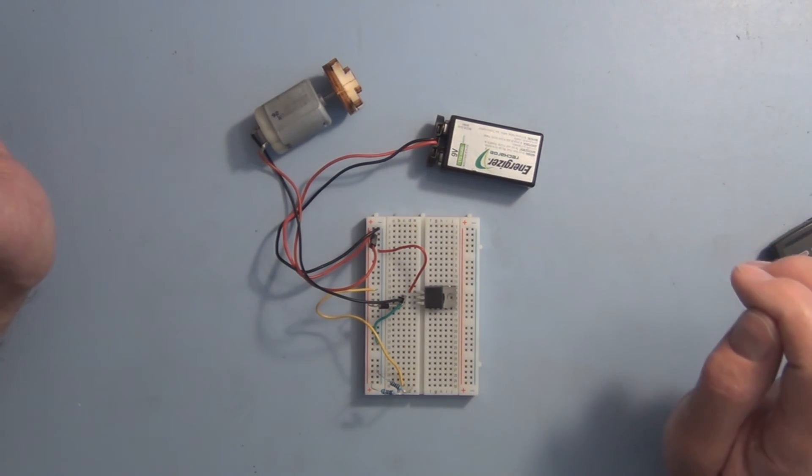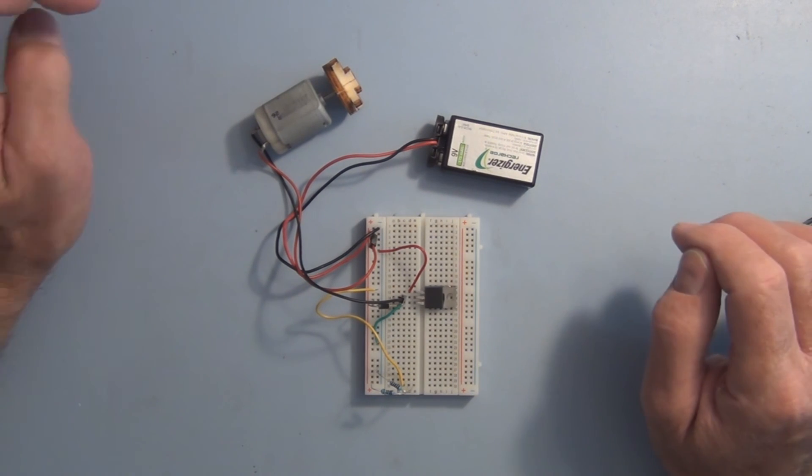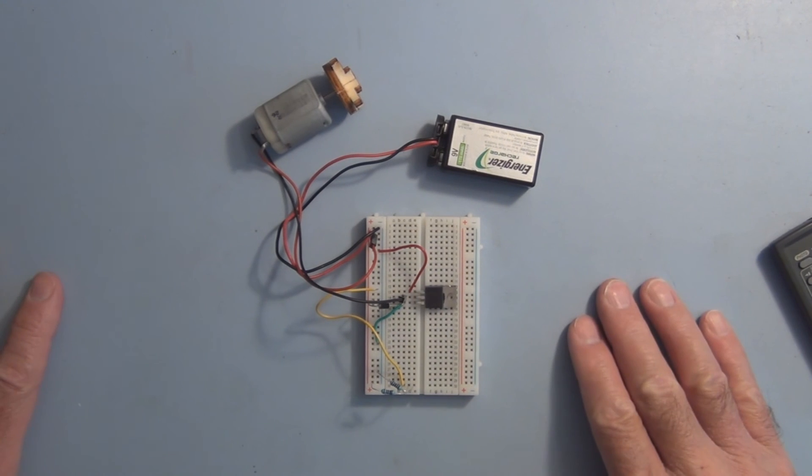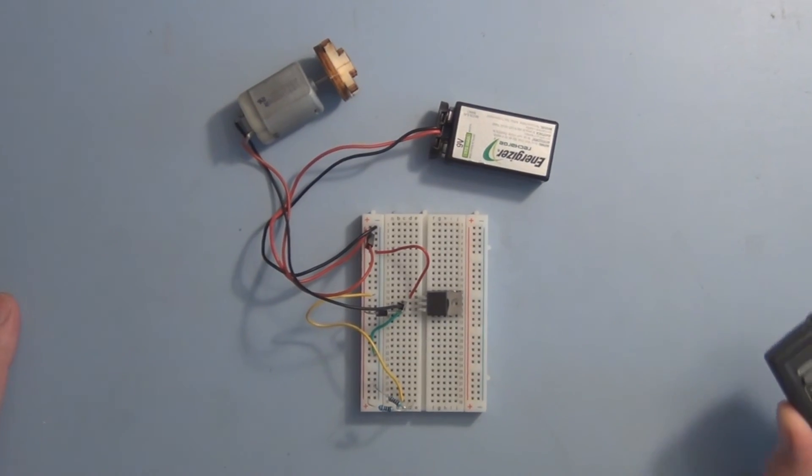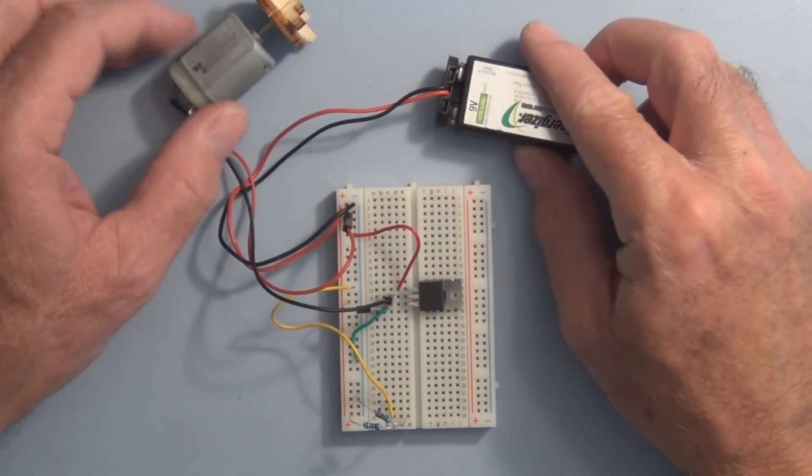Now remember, the grounds are very important and the voltages. You have to be certain that both circuits are on the same page when it comes to understanding what their grounds are and what the voltages are. So you don't get this ambiguity.